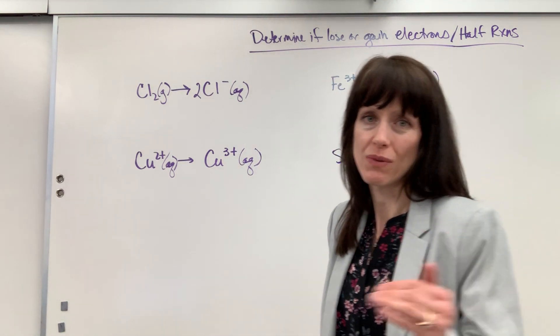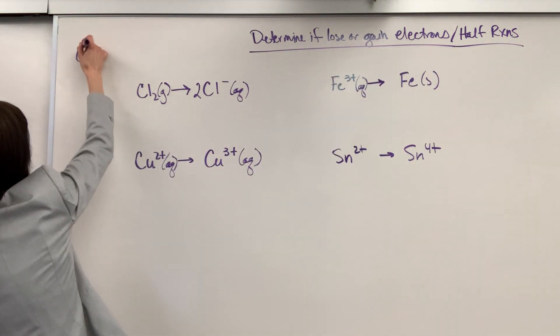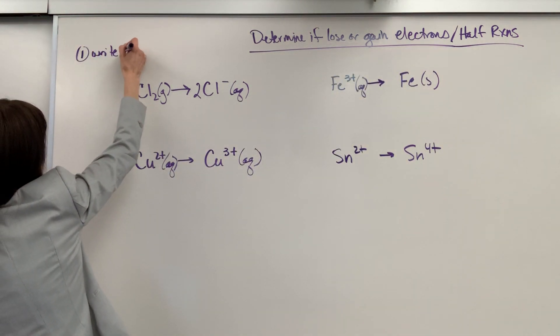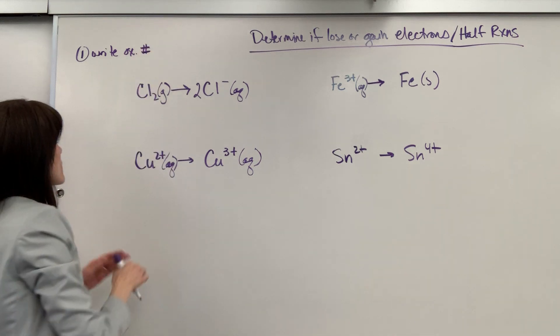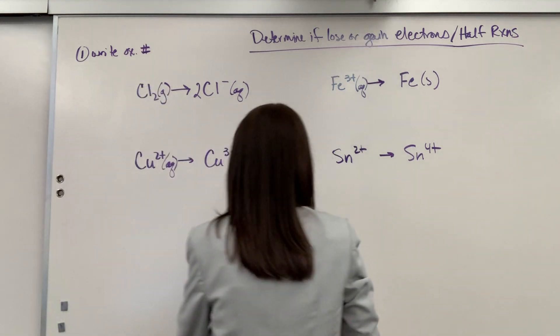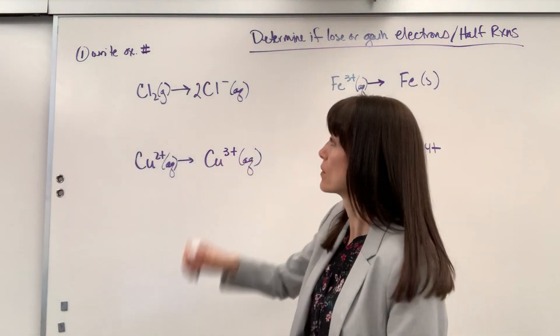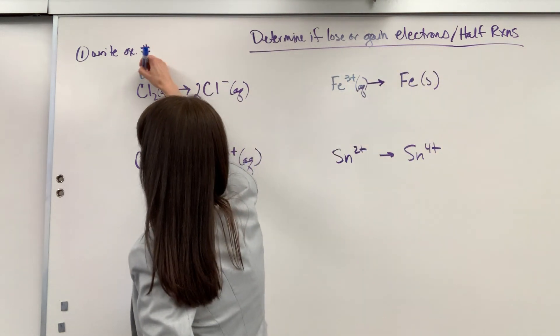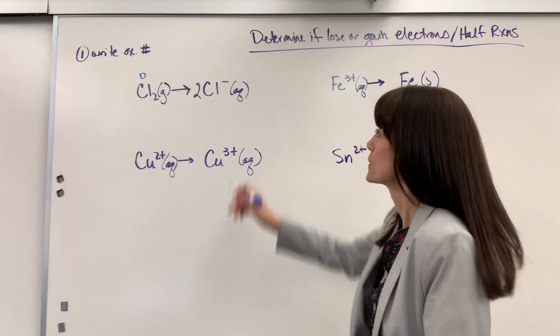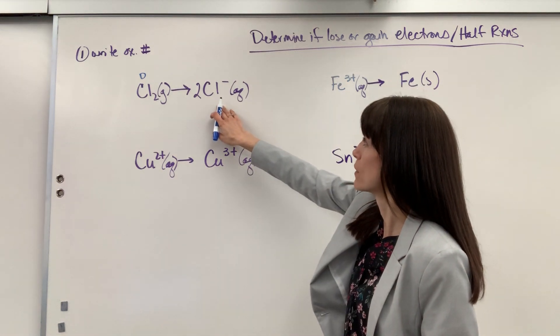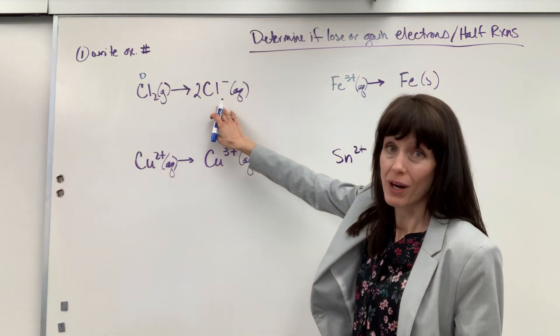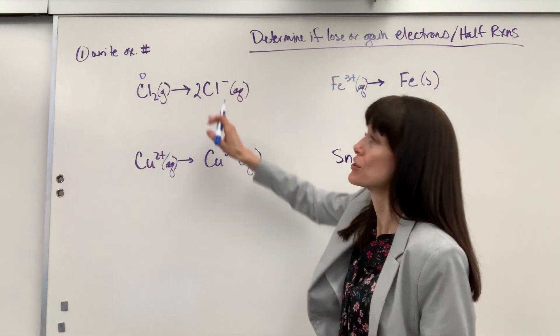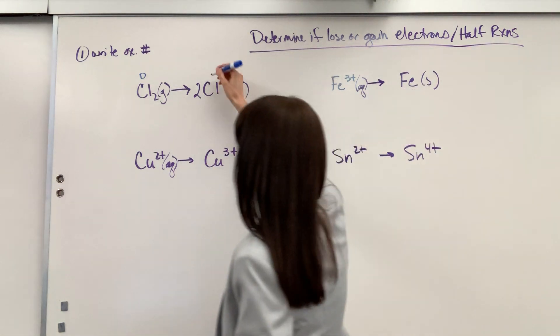Always where you begin is write oxidation numbers. So number one, you're going to write those oxidation numbers. Let's start with our chlorine. We have chlorine in its elemental form, chlorine all by itself. It's a gas, so the oxidation number is zero. Now it's going to go to its monoatomic ion, the chloride ion. So its charge is its oxidation number, which is a minus one.